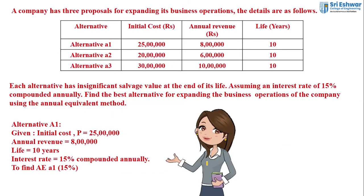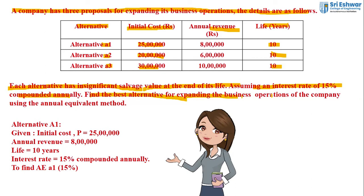The problem we are going to solve: a company has three proposals for expanding its business operations. The alternatives are A1, A2, and A3. The initial costs are 25 lakh, 20 lakh, and 30 lakh respectively. Each alternative has an insignificant salvage value at the end of its life, assuming an interest rate of 15% compounded annually. Find the best alternative using the Annual Equivalent Method.